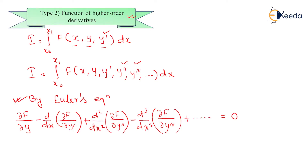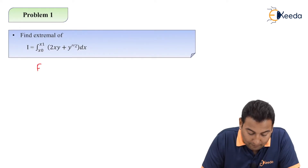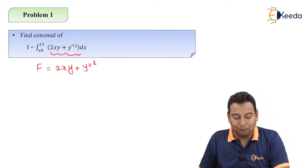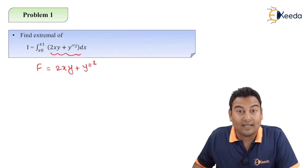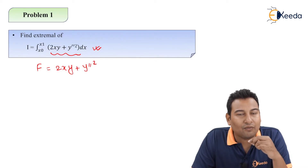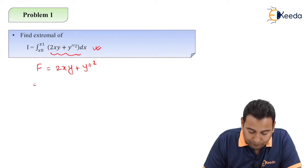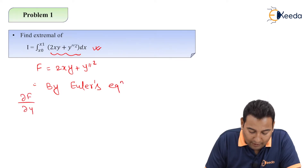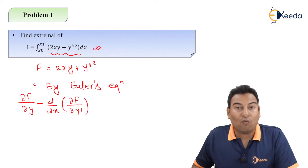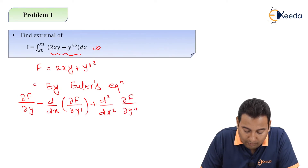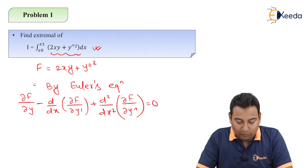Let's have a look at the problem. Here f is equal to 2xy plus y double dash squared. In this functional we do have x, y, and y double dash. This is the first time we have a higher order derivative - we used to have x, y, and y dash; now for the very first time we have y double dash. Therefore by Euler's equation: ∂f/∂y minus d/dx of ∂f/∂y dash, and since we have y double dash, we go up to plus d²/dx² of ∂f/∂y double dash, equal to zero.